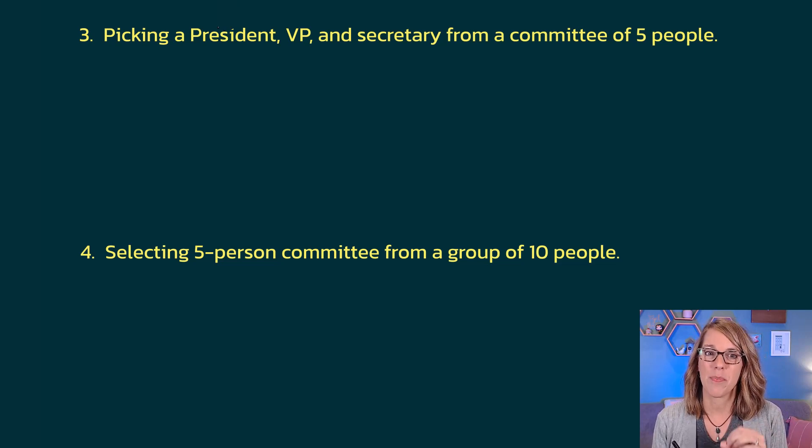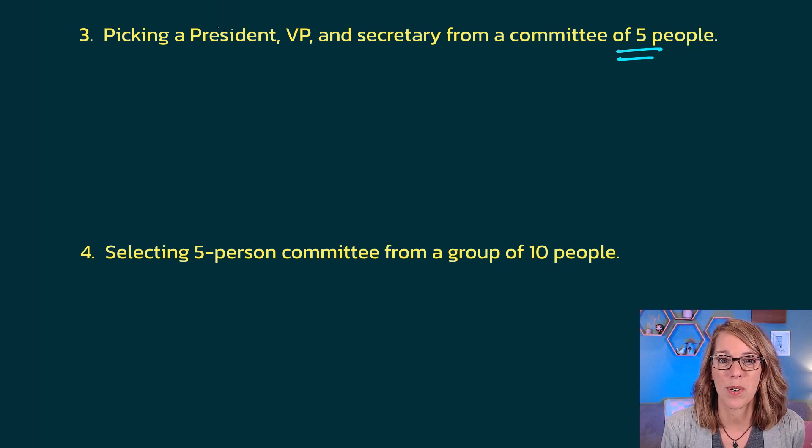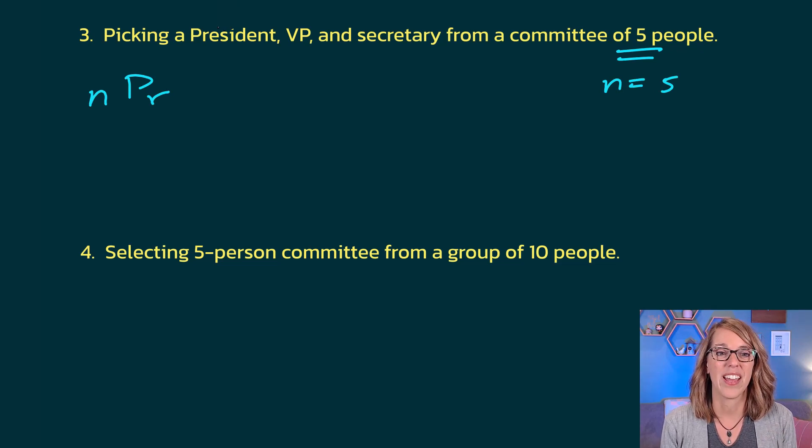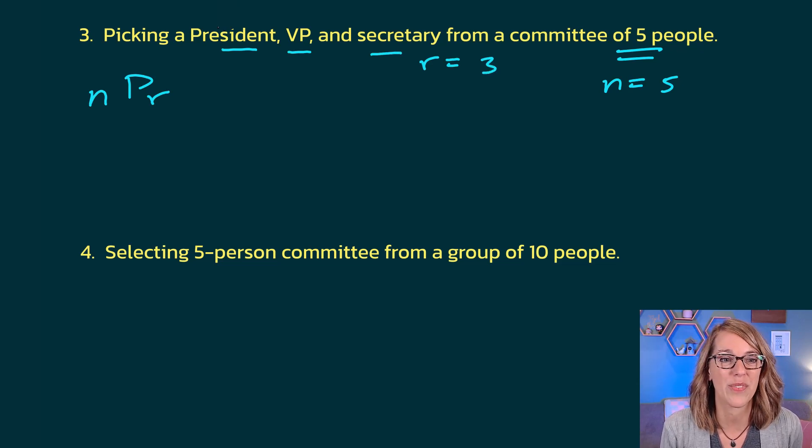For number three, we are picking a president, a vice president, and a secretary from a committee of five people. I'm assigning positions this time. When I'm assigning positions, that's another sign that I want to be using a permutation. Order matters. I can pick the same three people, but I can rename their positions by reordering them. So this one's going to be a permutation. So it's going to be NPR. N is equal to 5, the number that I'm choosing from, and R, 1, 2, 3 different positions. So R is equal to 3. So this would be 5P3.